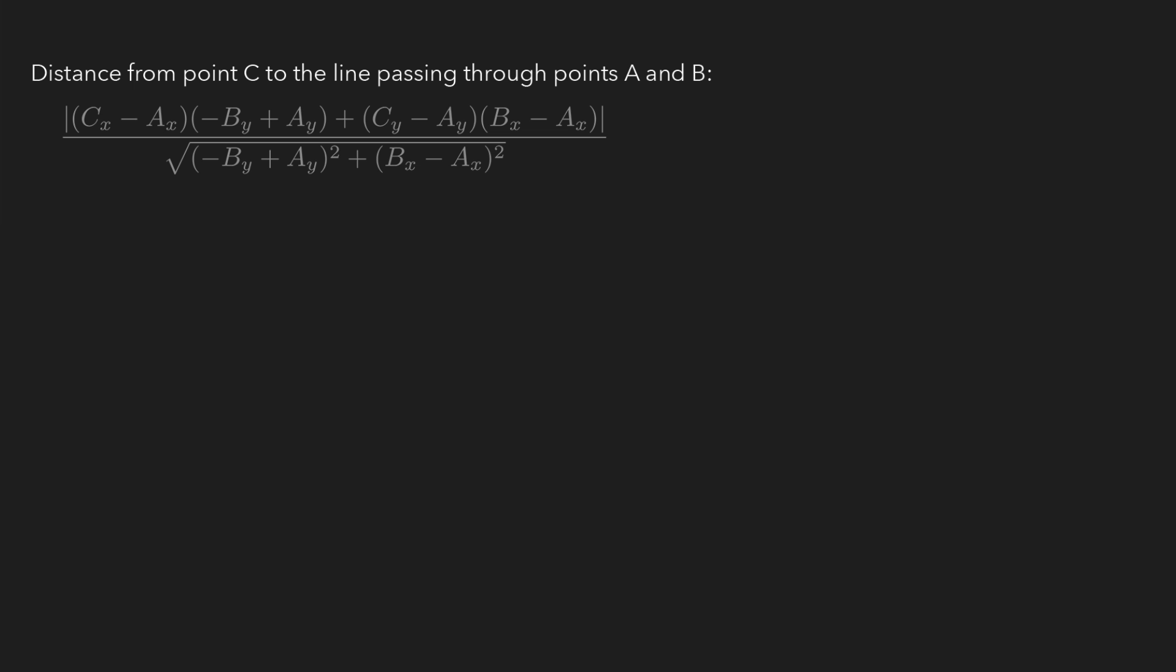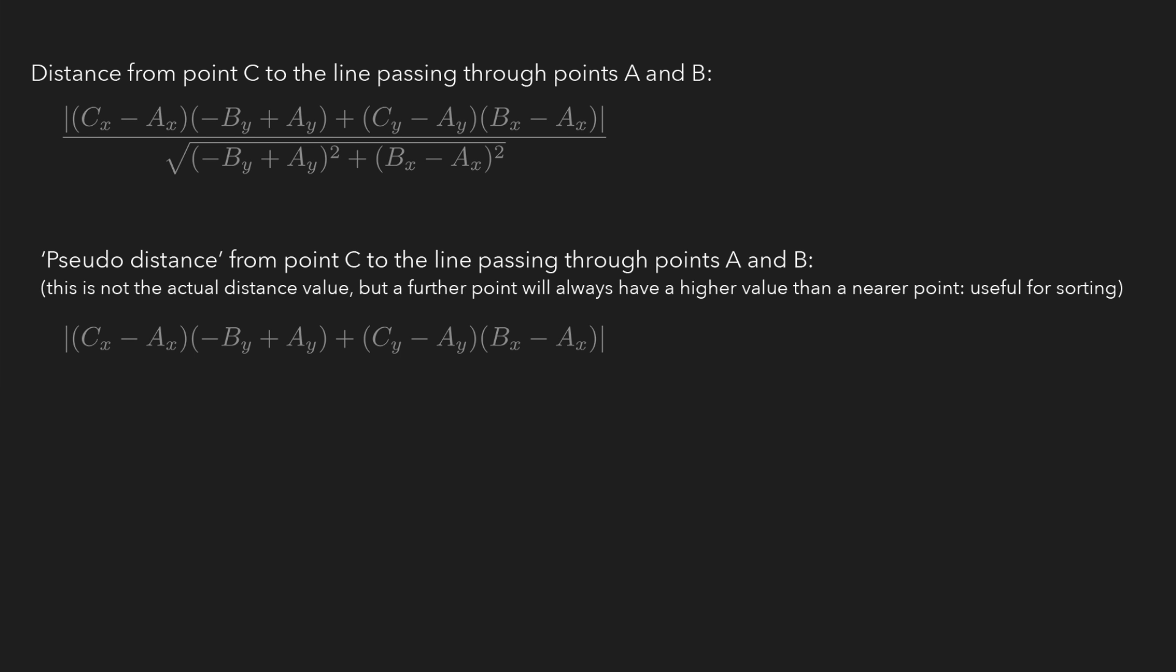First of all, it's sometimes the case that we have multiple points, and we don't care about their actual distances from the line, we only want to sort them based on how far away they are. If this is the case, we can of course do the computation a lot more efficiently, by leaving out the square root term.